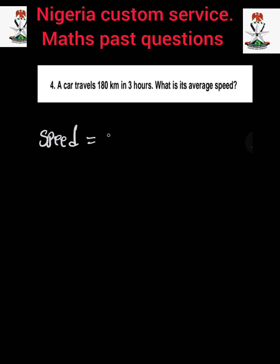Question number 4: A car travels 120 kilometers in three hours. What is the average speed? The first thing we need to do is to recall the formula for speed. Speed is equal to distance divided by time.